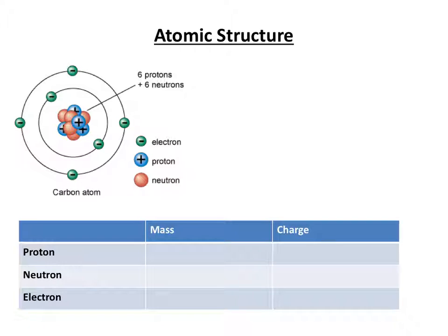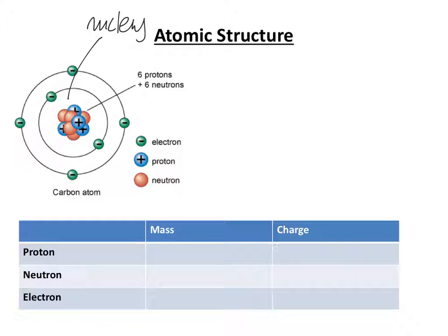You're probably used to seeing diagrams that look a bit like this. You can see there's a load of particles in the middle and then some rings around the outside. The particles in the middle sit in what's called the nucleus. As you can tell from this diagram of a carbon atom, those are the protons and the neutrons. The electrons surround the nucleus in shells.